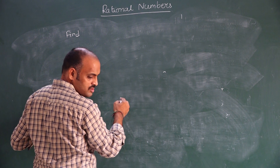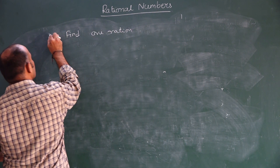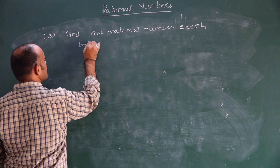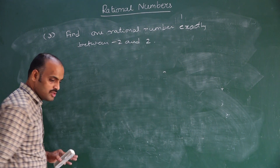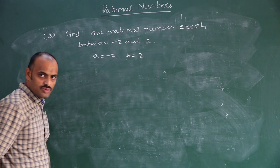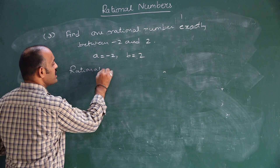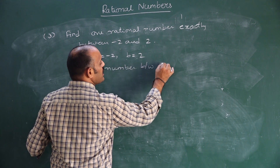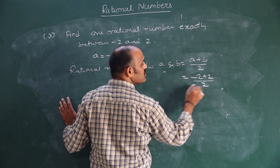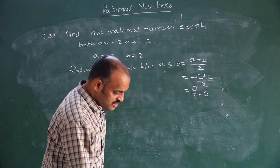Find one rational number exactly between minus 2 and 2. Here A is minus 2 and B is 2. Using the formula, the rational number between A and B is A plus B by 2. Therefore, minus 2 plus 2 by 2 — what is minus 2 plus 2? Zero. So 0 by 2 is 0. Therefore the rational number exactly between minus 2 and 2 is 0.